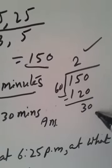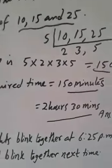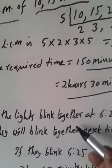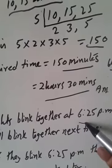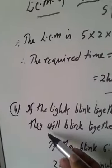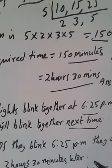It will be 2 hours 30 minutes. Answer 2 hours 30 minutes. If the lights blink together at 6:25 pm, at what time they will blink together next time again?